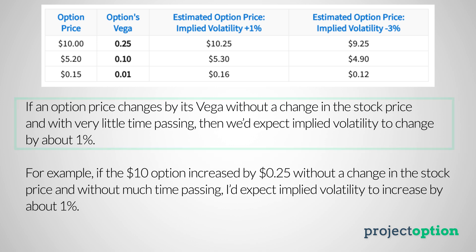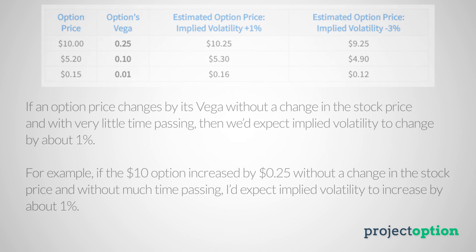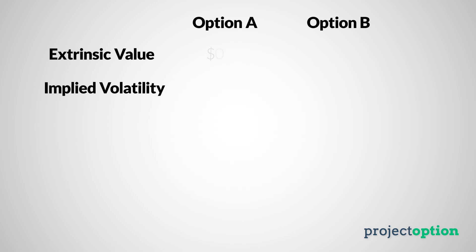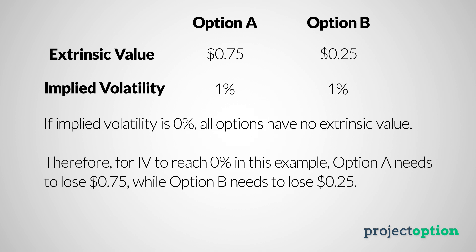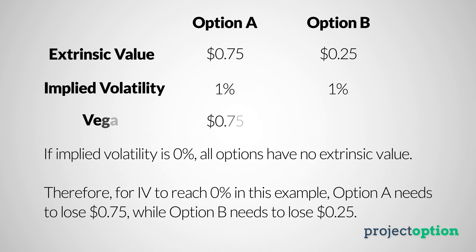For instance, if we have a $10 option with a vega of 0.25 and the stock price does not change, and within a 5-minute period the option price goes from $10 to $10.25, then I would expect implied volatility to have increased by about 1%. In a more extreme example, let's say option A is worth $0.75 and option B is worth $0.25, and implied volatility is 1%. If implied volatility goes to 0%, the options have no extrinsic value whatsoever. So if option A went from $0.75 to $0 and option B went from $0.25 to $0, we would say option A has a vega of 0.75 and option B has a vega of 0.25.